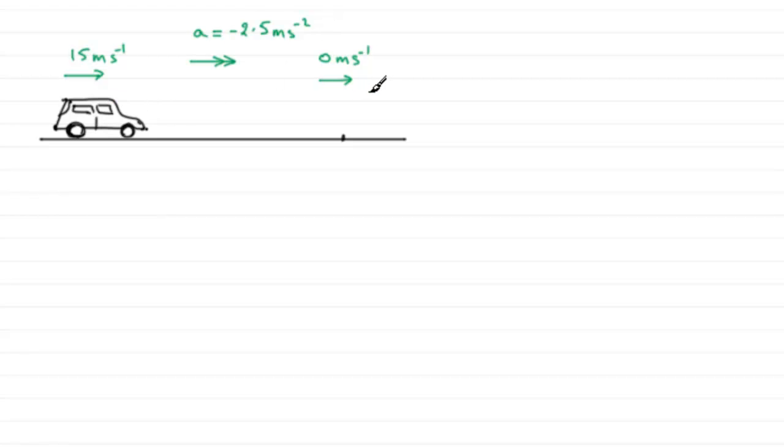But it's this part here that we've got to take care over. The acceleration will be a negative value. It says it's decelerating at a rate of 2.5 meters per second squared, so the acceleration is minus 2.5.